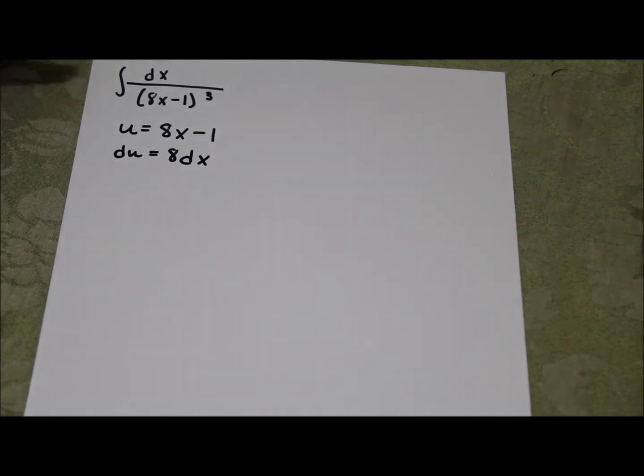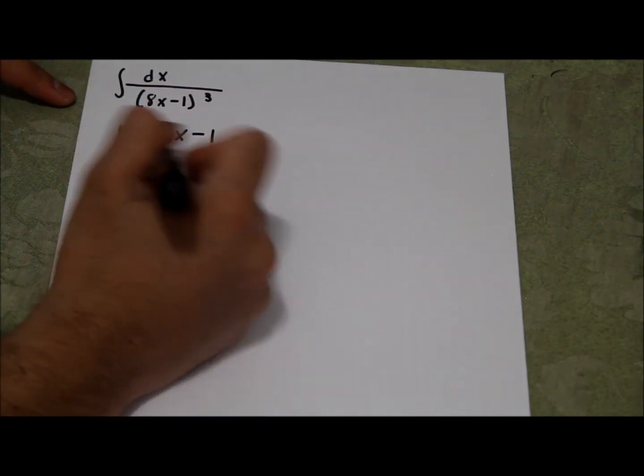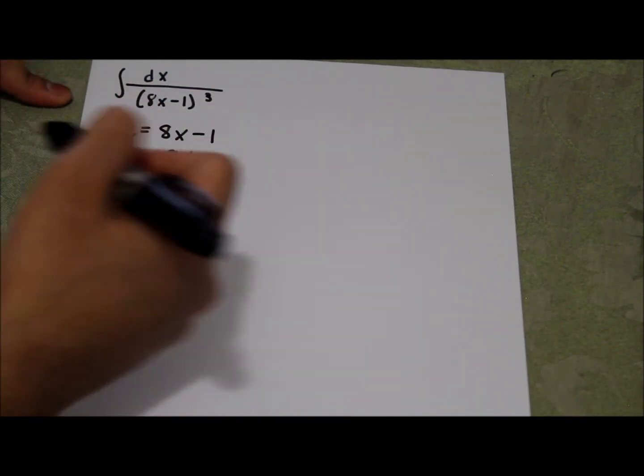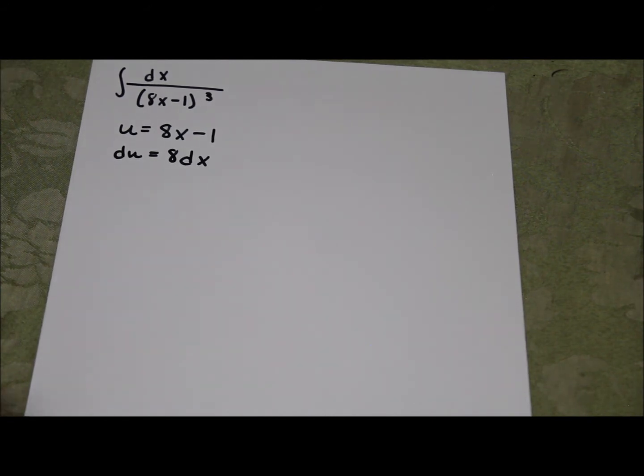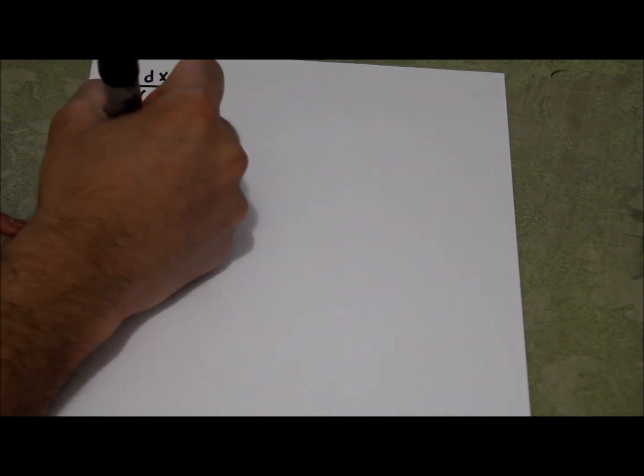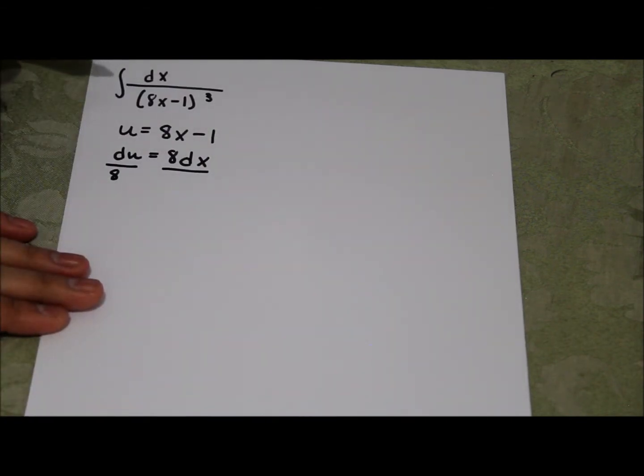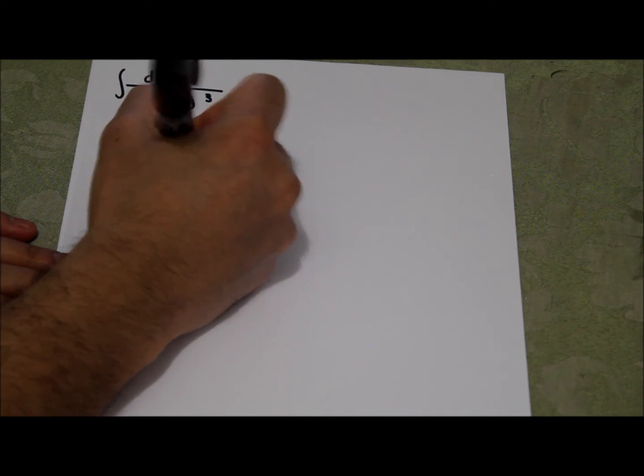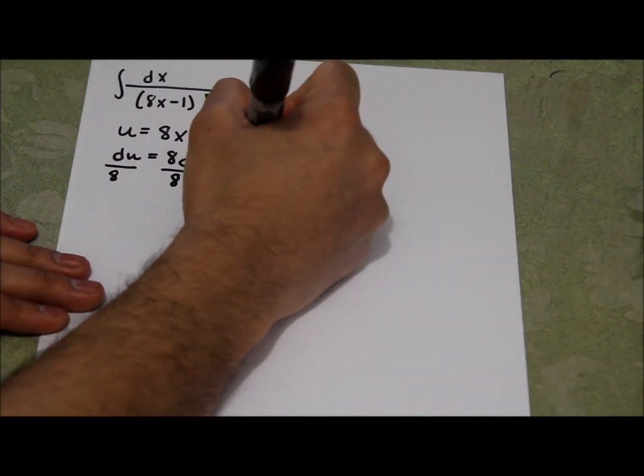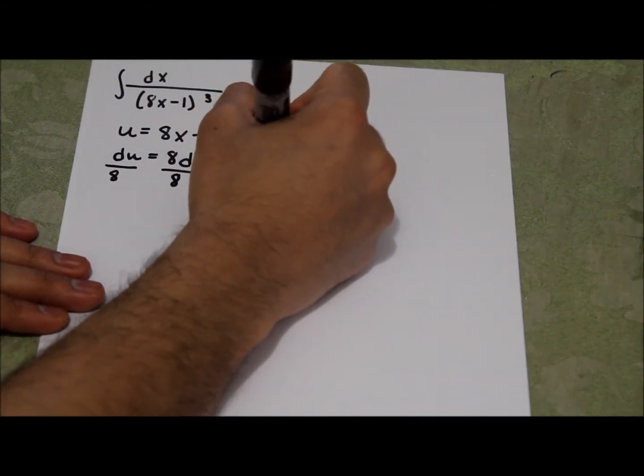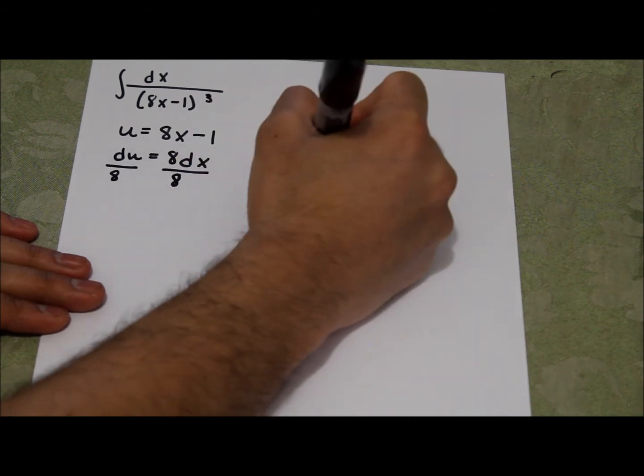But this time, we don't have du equals dx. We have du equals 8 dx. So what we need to do is divide both sides by 8 because we want dx. Because in our original problem we have dx, not 8 dx. So we divide both sides by 8 and we get 1 eighth du equals dx.